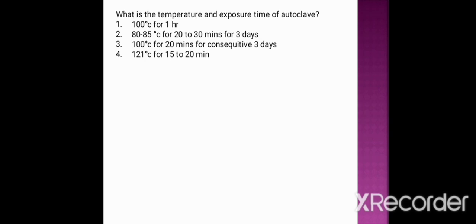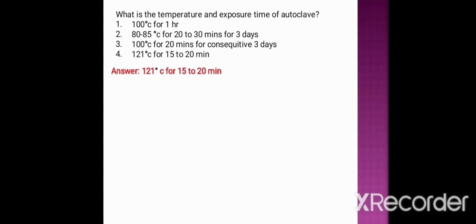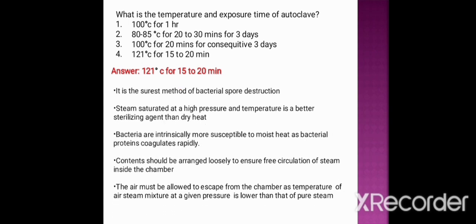Next question: what is the temperature and exposure time of autoclave? Option one: 100 degrees centigrade for one hour. Option two: 80 to 85 degrees centigrade for 20 to 30 minutes for three days. Option three: 100 degrees centigrade for 20 minutes for three days. Option four: 121 degrees centigrade for 15 to 20 minutes. The correct option is 121 degrees centigrade for 15 to 20 minutes. Autoclave uses saturated steam at high pressure — steam is a better sterilizing agent than dry heat because bacterial proteins coagulate more rapidly in moist heat. Contents should be arranged loosely to allow free circulation of steam, and air must be allowed to escape since an air-steam mixture at a given pressure is cooler than pure steam.